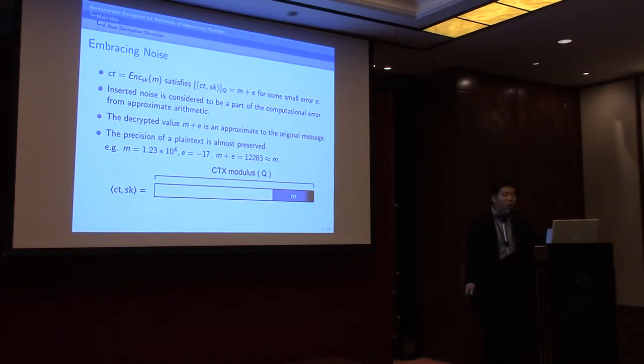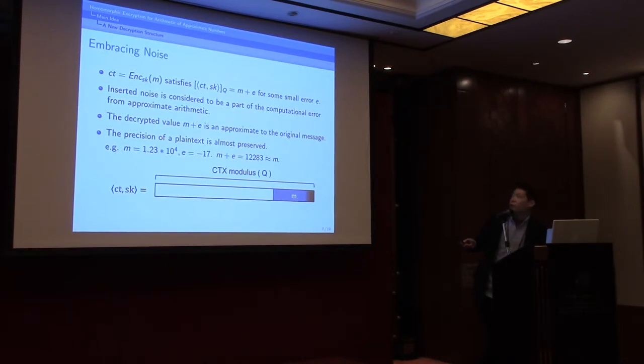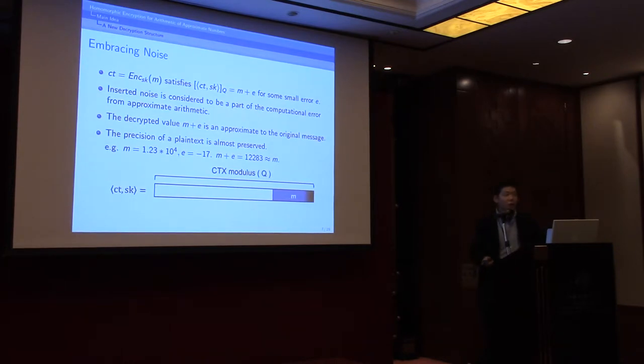The first idea is to embrace noise. Previously, the encryption noise from ring learning error problem was considered to be untouchable, and plaintext was stored in a totally different place. But why don't we just add this encrypted noise directly to plaintext? Of course, we cannot recover the exact message from this encrypted ciphertext. But in the case of approximate arithmetic, if e is small enough, then m plus e is a good approximation to the original message, and can substitute the original message in following computation.